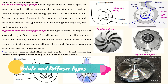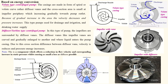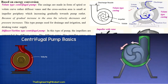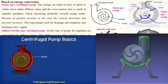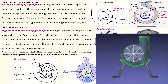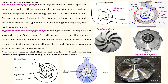The first classification is based on energy conversion. There are two types: volute type and diffuser type. In the volute type, looking at the cross-section of the casing from the top, the cross-sectional area gradually increases toward the outlet. As the area increases, the pressure head increases. This type of pump is mainly used for drainage, irrigation, and drinking water supply.